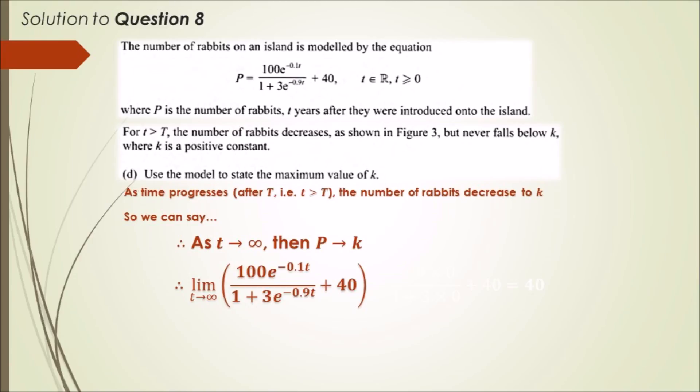If you plug in five nines, you'll know that e to the negative infinity actually approaches 0, so it's like 100 times 0, and likewise over 1 plus 3 times 0. And 100 times 0 alone is 0, so you don't even need to worry about the bottom. Hence, 0 plus 40 will give you 40.